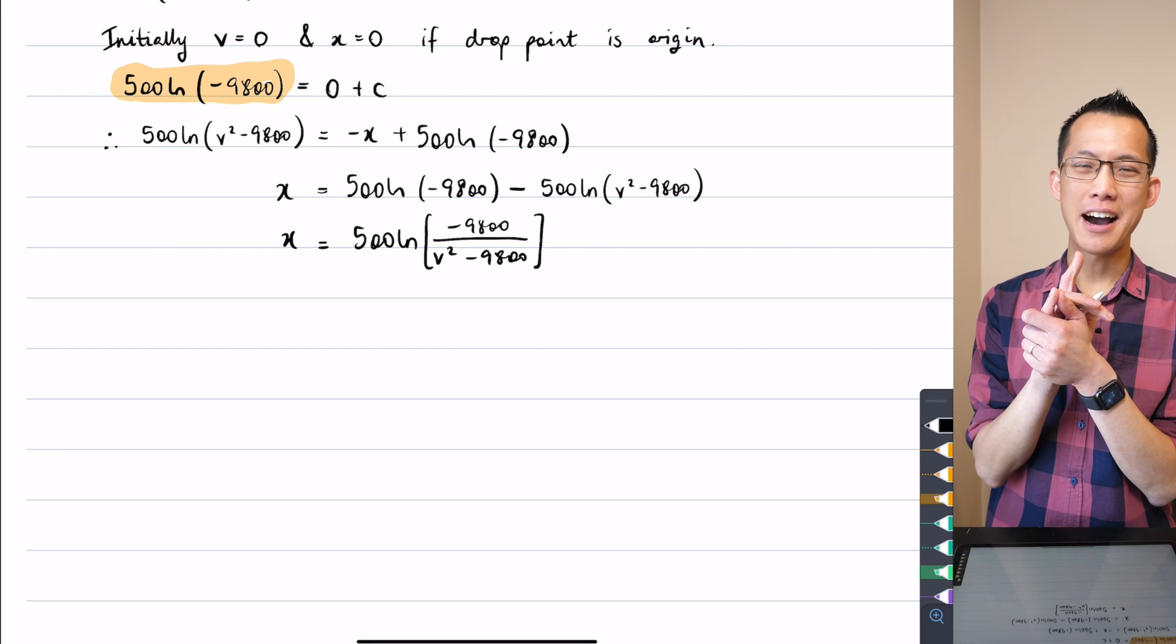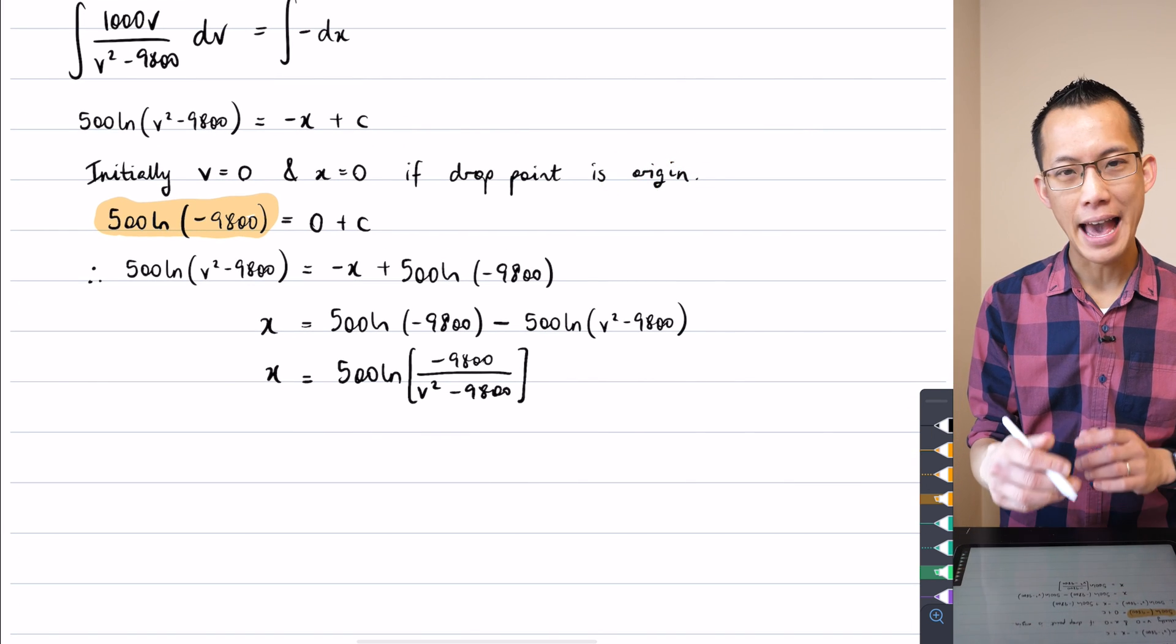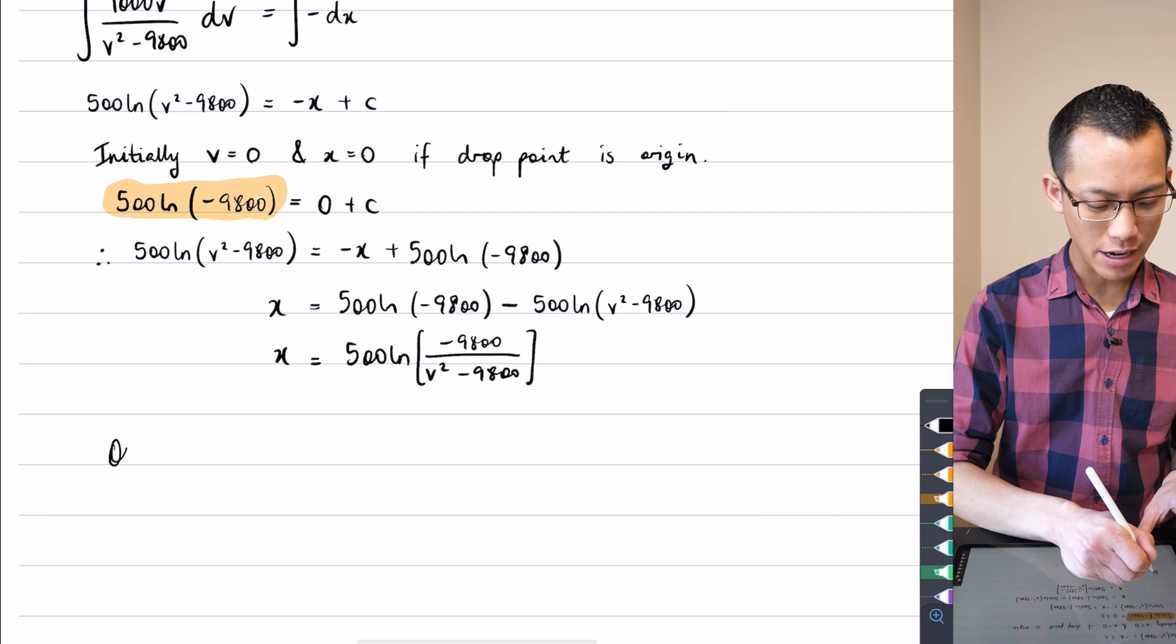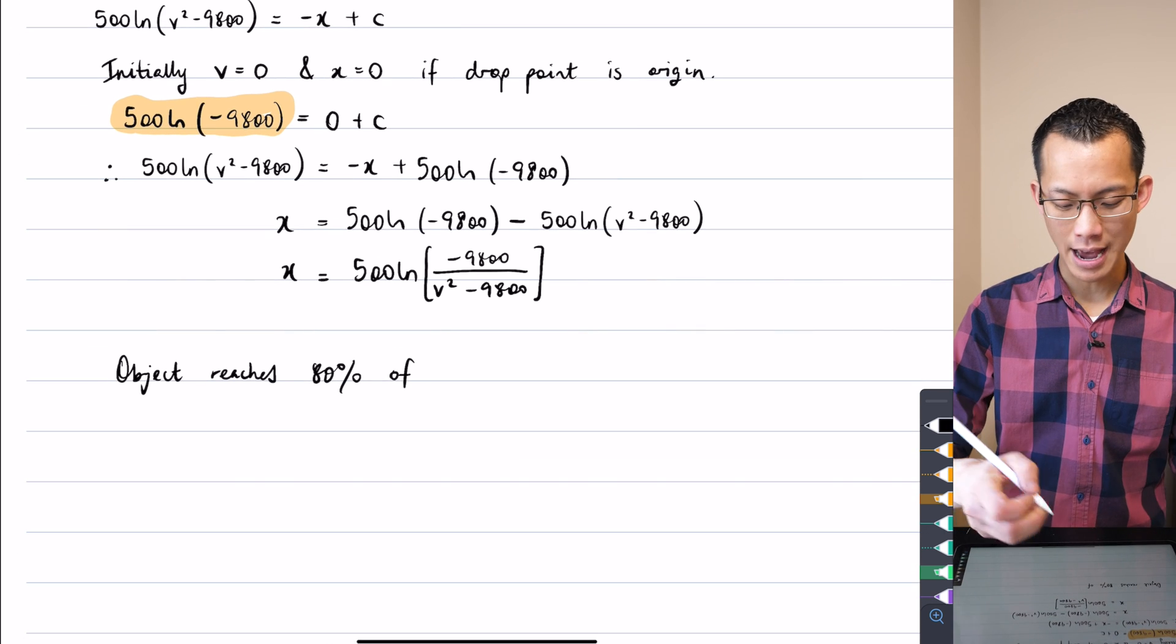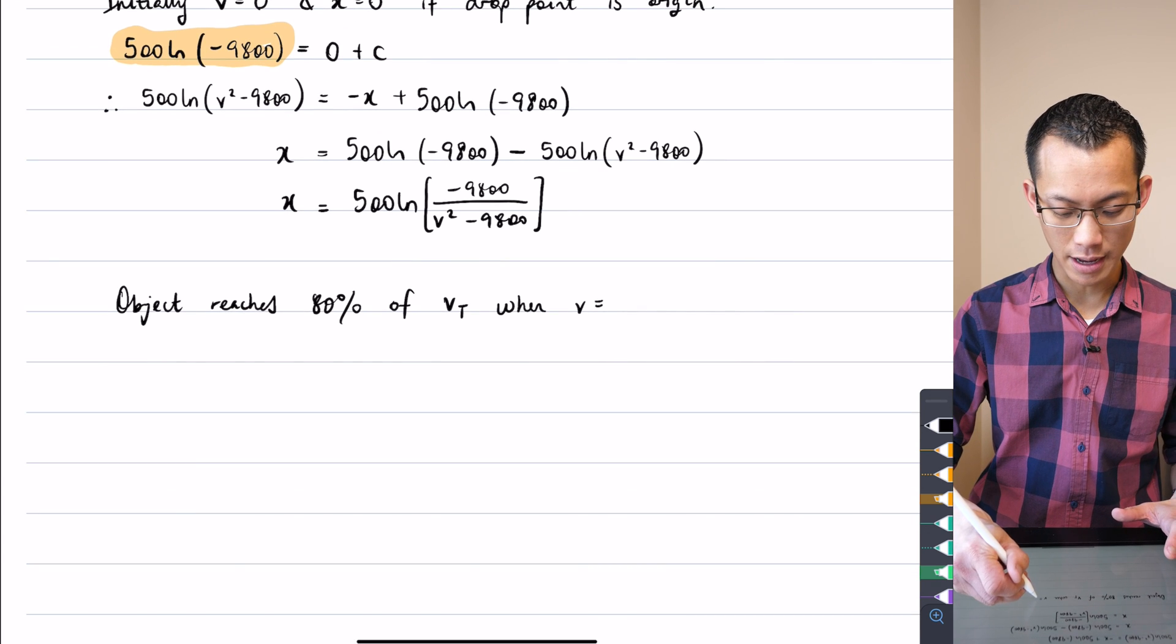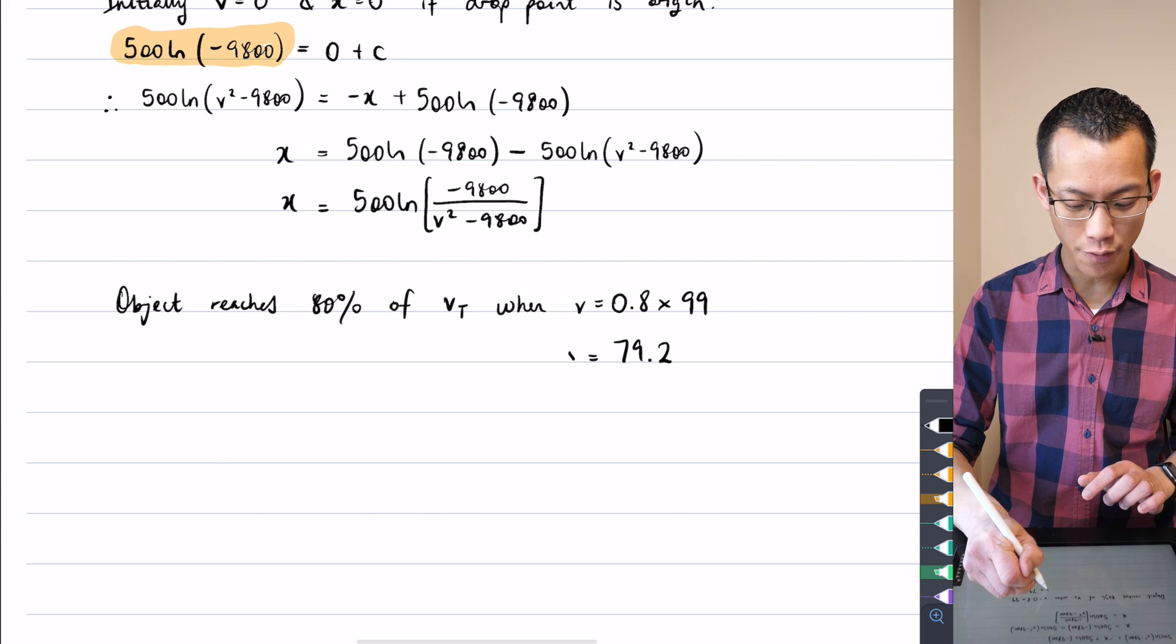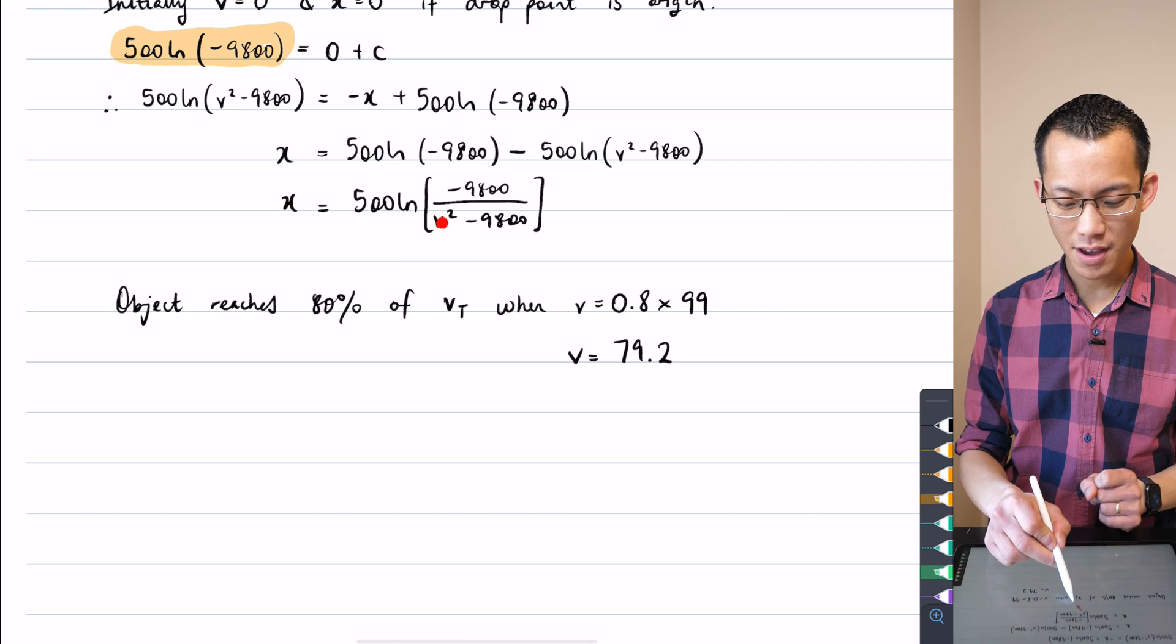Okay now what was I trying to solve? I was trying to solve for where the object was dropped from which I've defined as the origin. The way I can know where it was dropped from is because when you impact the ground you're going to reach a velocity of 80% of the terminal velocity. The object will reach 80% of the terminal velocity when v equals 0.8 times 99 meters per second which is 79.2. So all I'm going to do is take that value of v and substitute it into my displacement equation.